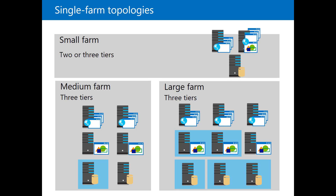If it's two servers, one of them will be for DC (domain controller) and the other one will be used for the database and SharePoint. In most cases it will be at least three servers — one dedicated for the database, one for SharePoint, and the last one for the DC domain controller.